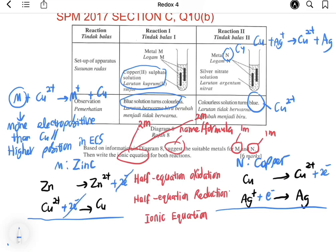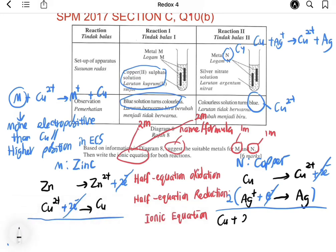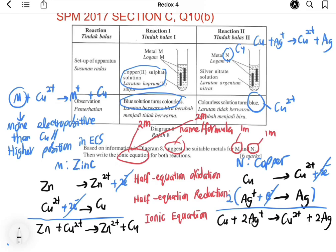Now let's combine the equations to make the ionic equation. For reaction one, both sides have 2 electrons, so the electrons cancel out. For reaction two, the electrons are not balanced, so the reduction half equation needs to be multiplied by 2 so that 2 electrons cancel out. The resulting ionic equations are: Cu + 2Ag⁺ → Cu²⁺ + 2Ag, and Zn + Cu²⁺ → Zn²⁺ + Cu.